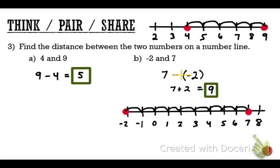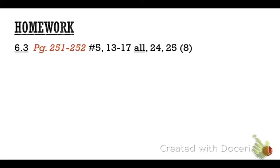Tonight's homework is 6.3. You're going to complete it on Big Ideas and also on paper. That's why we did the distance review problem — there will be a similar one in the homework.